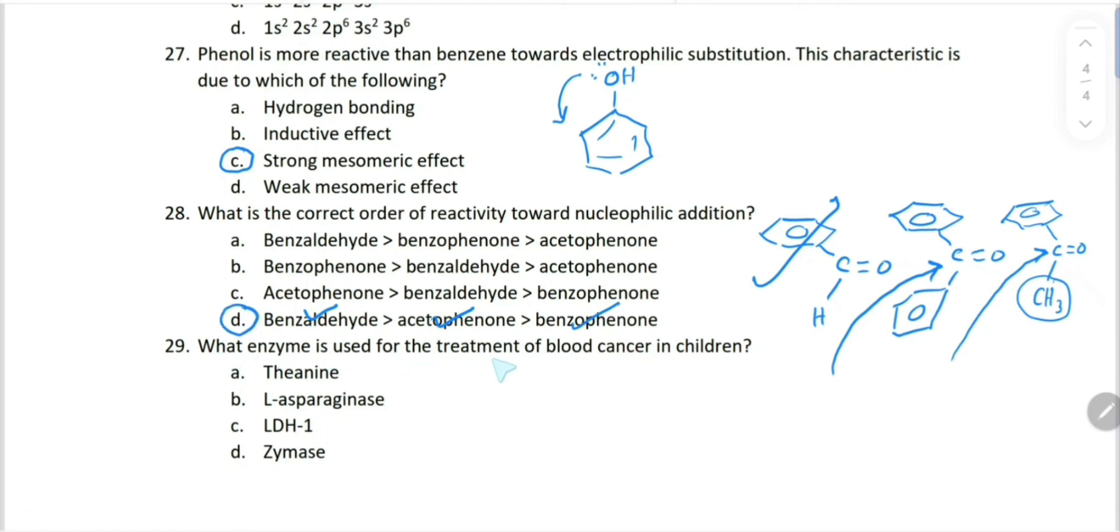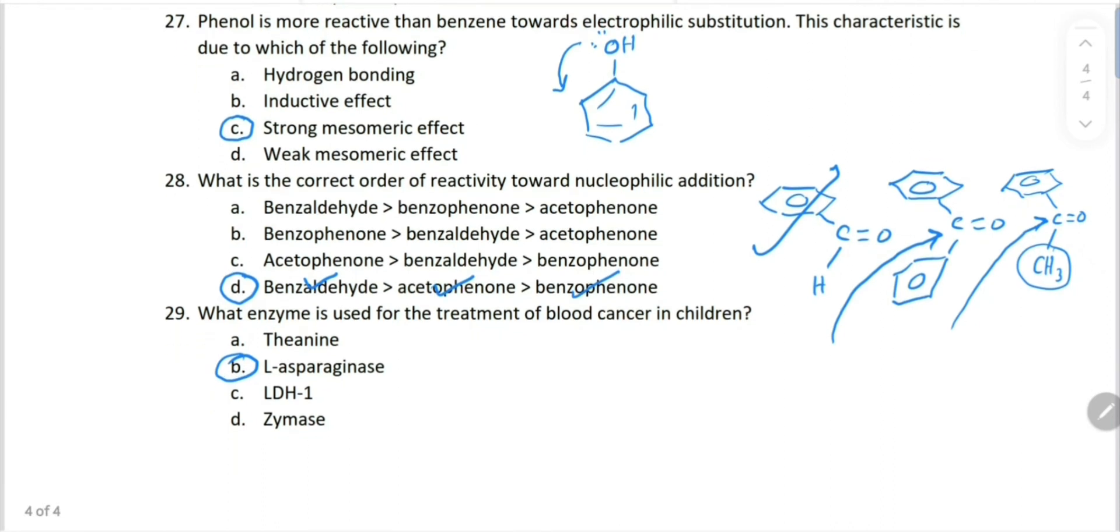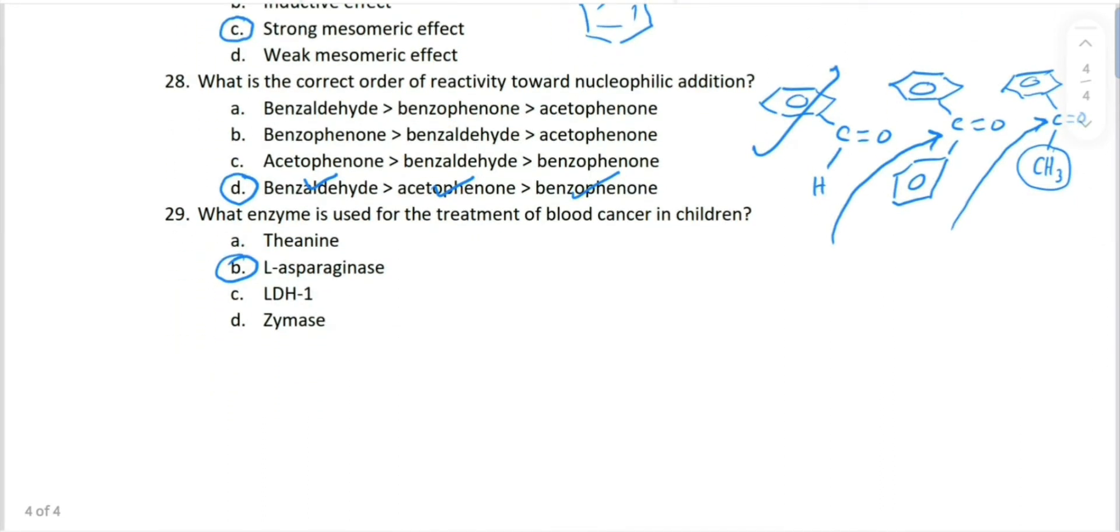What enzyme is used for the treatment of blood cancer in children? L-asparaginase enzyme is used for this. Okay students, so these were the MCQs that I found on the internet online. If you have more MCQs, then you can show me or send me. And wishing you all the best.